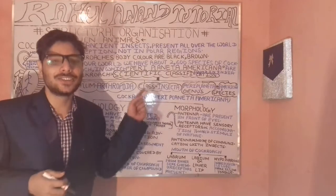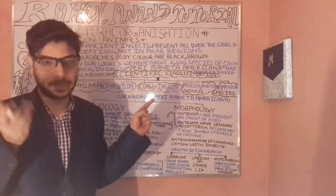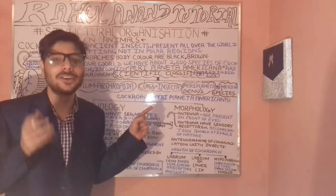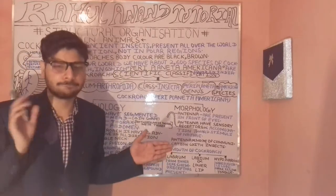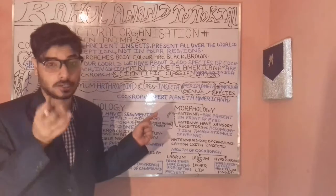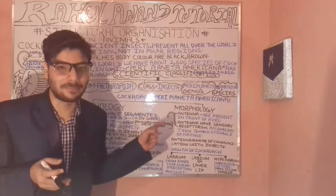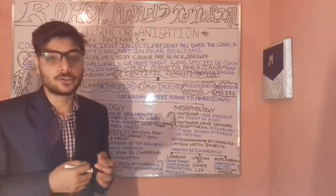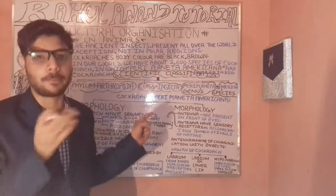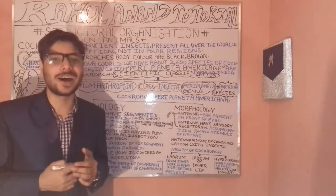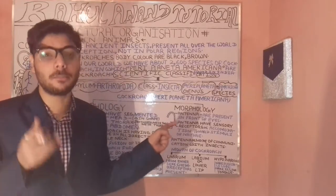After phylum Arthropoda, we have the class — cockroaches belong to the class Insecta. Then comes genus and species. The name Periplaneta americana is composed of two words: Periplaneta corresponds to the genus, and americana corresponds to the species.